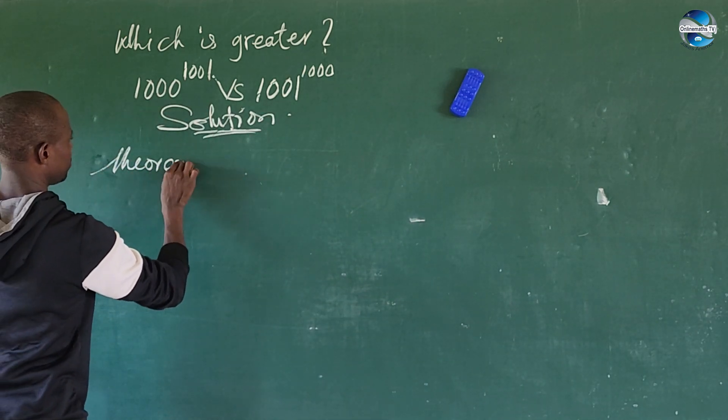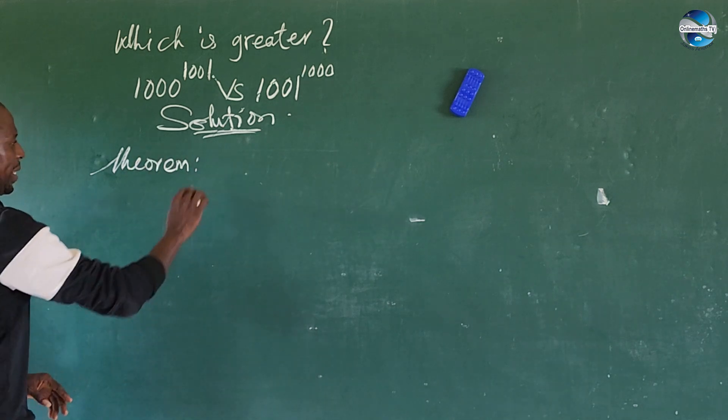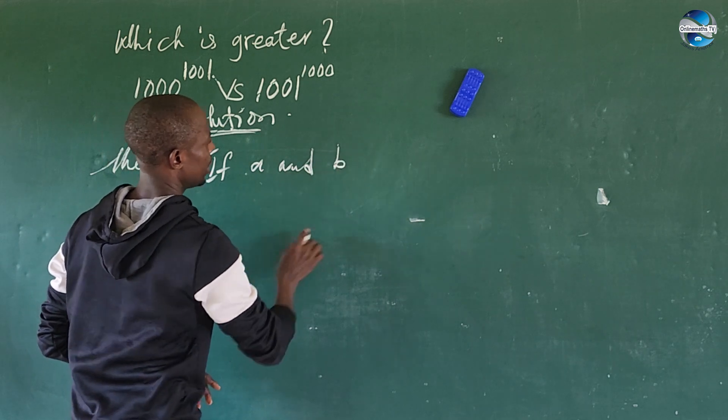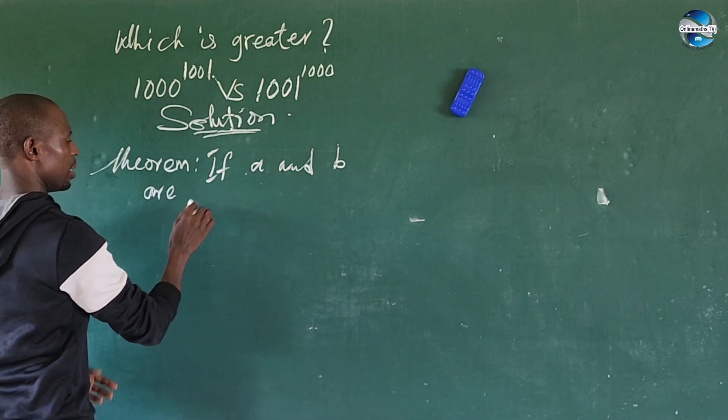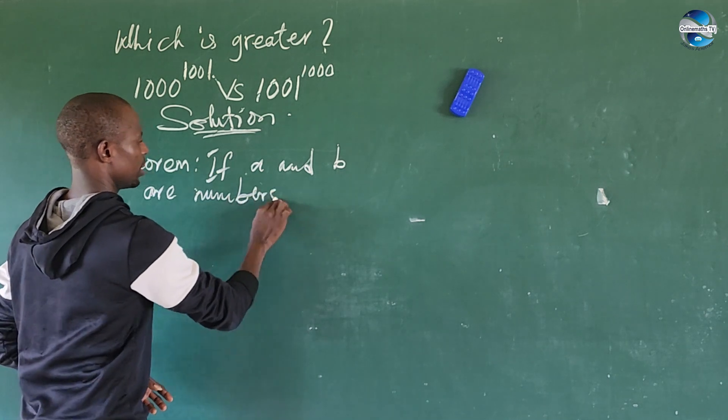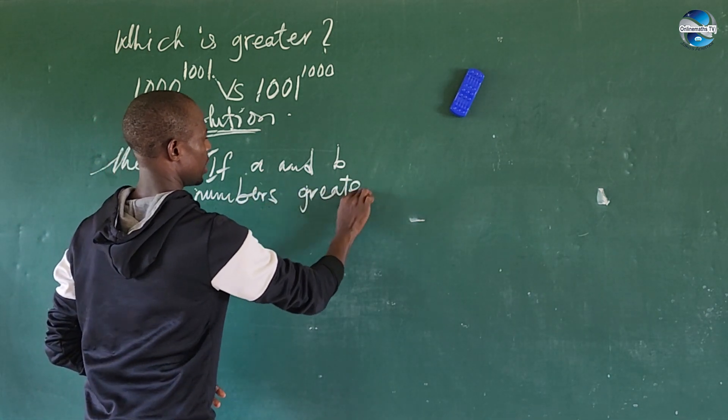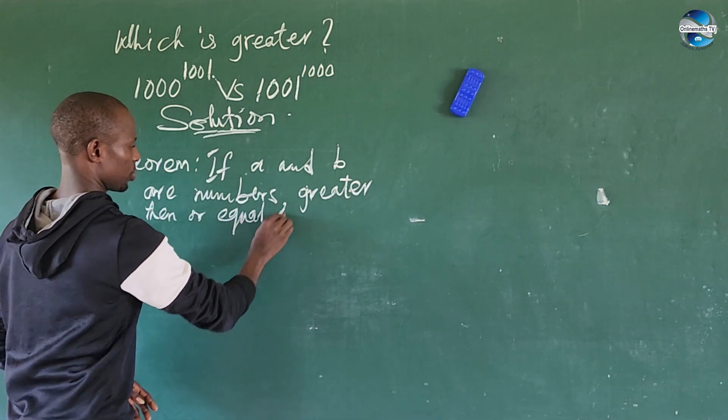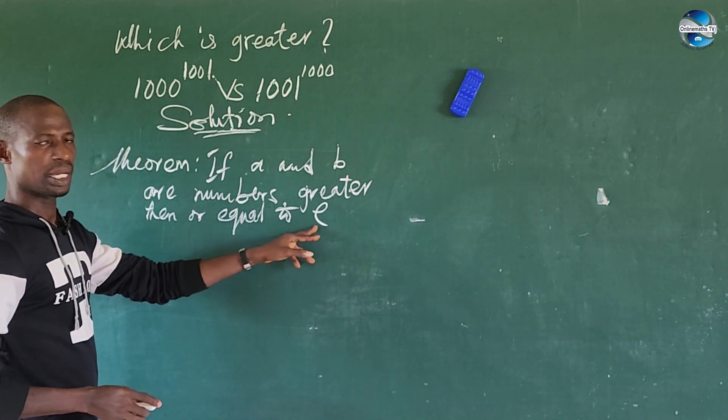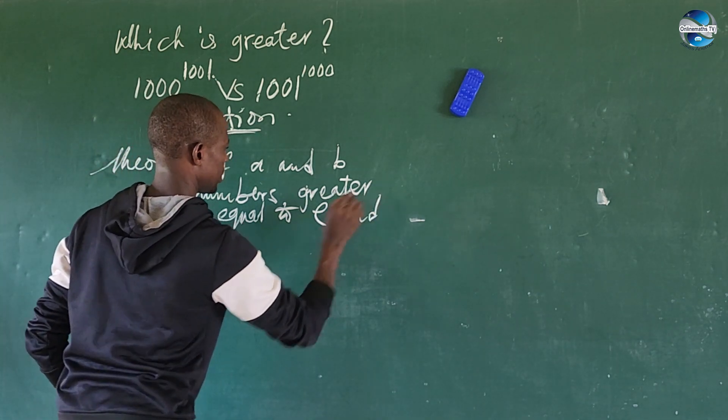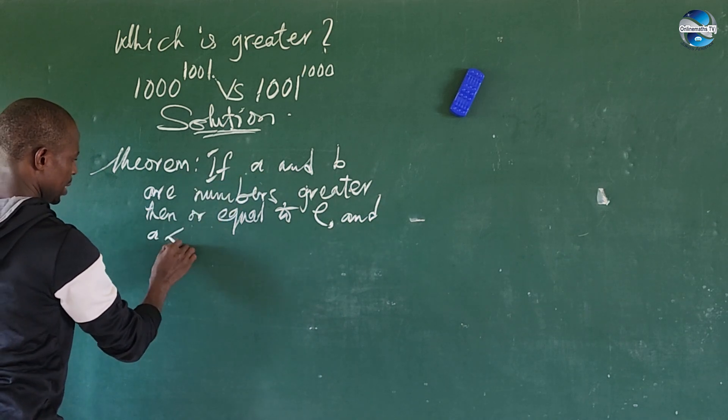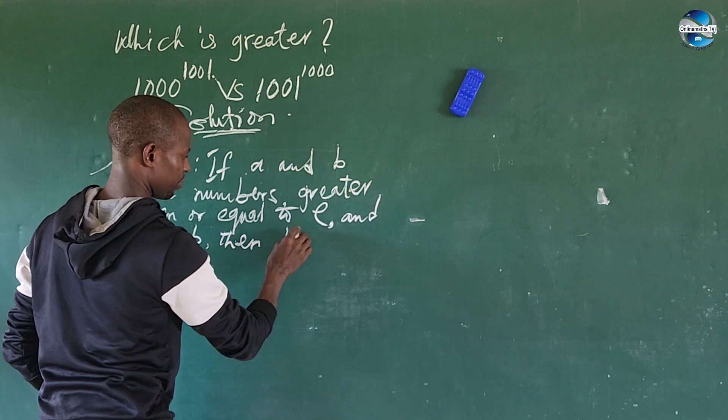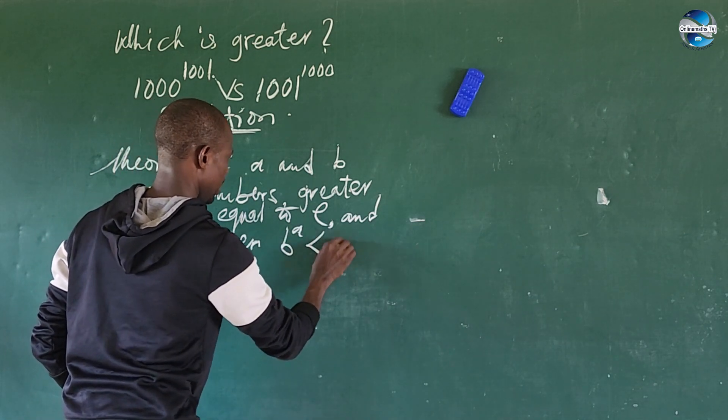Okay, so we have a theorem. If A and B, A and B, are numbers greater than or equal to E, okay, equal to E, our constant here, and your A is less than B, then our B to the power of A will be less than your A to the power of B.